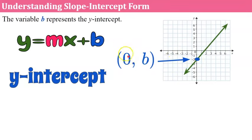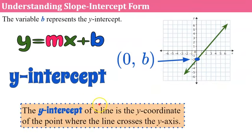Anytime you see an ordered pair with an x-coordinate of 0, you know that point is going to fall on the y-axis, and if it's a point on the line, it's the y-intercept. The y-intercept of a line is the y-coordinate of the point where the line crosses the y-axis. In this case our y-intercept is negative 2.